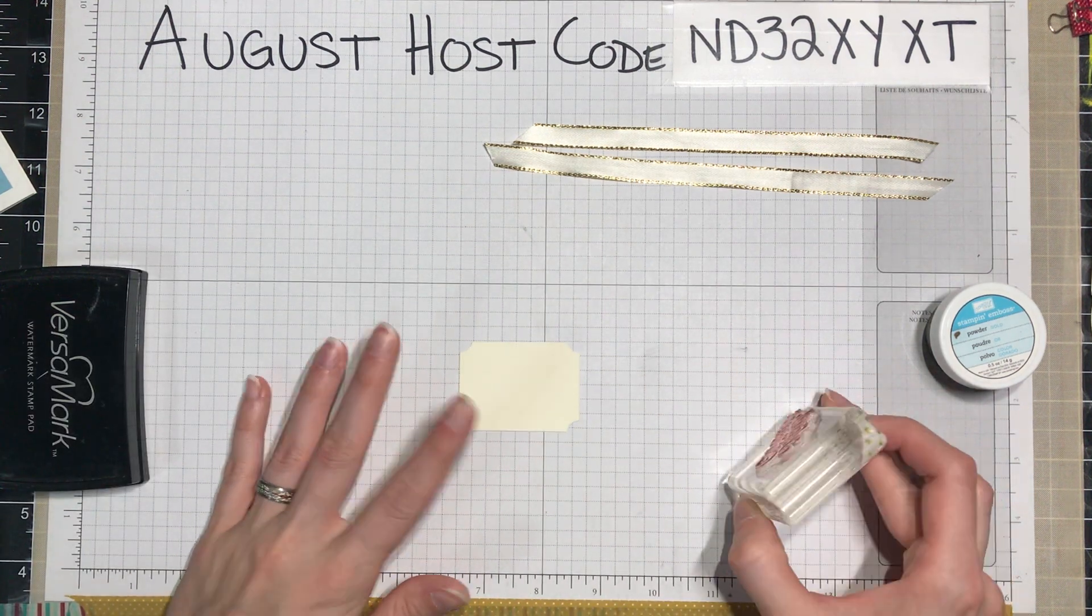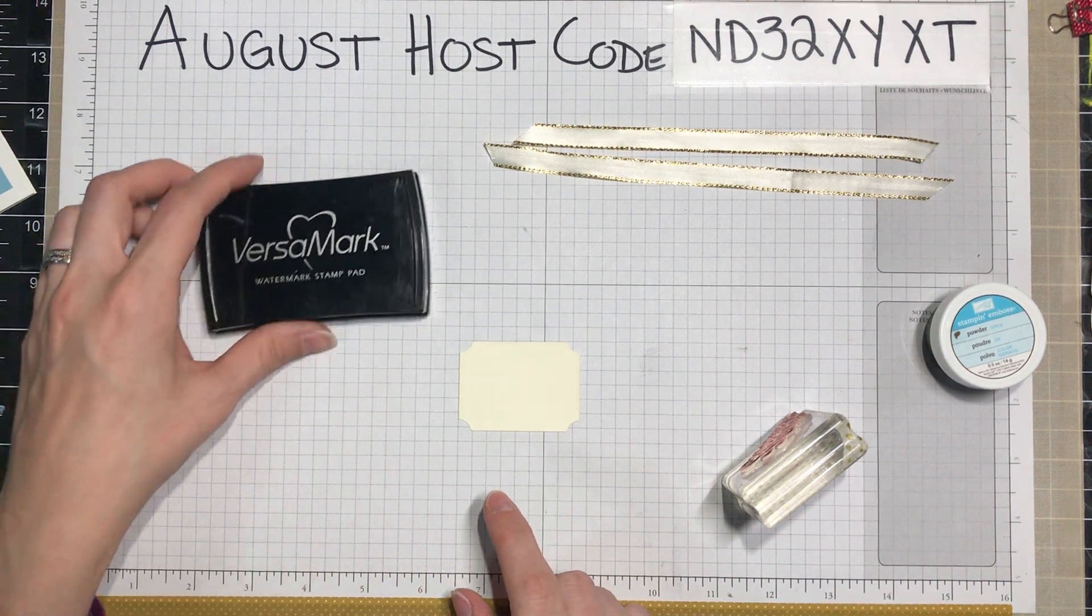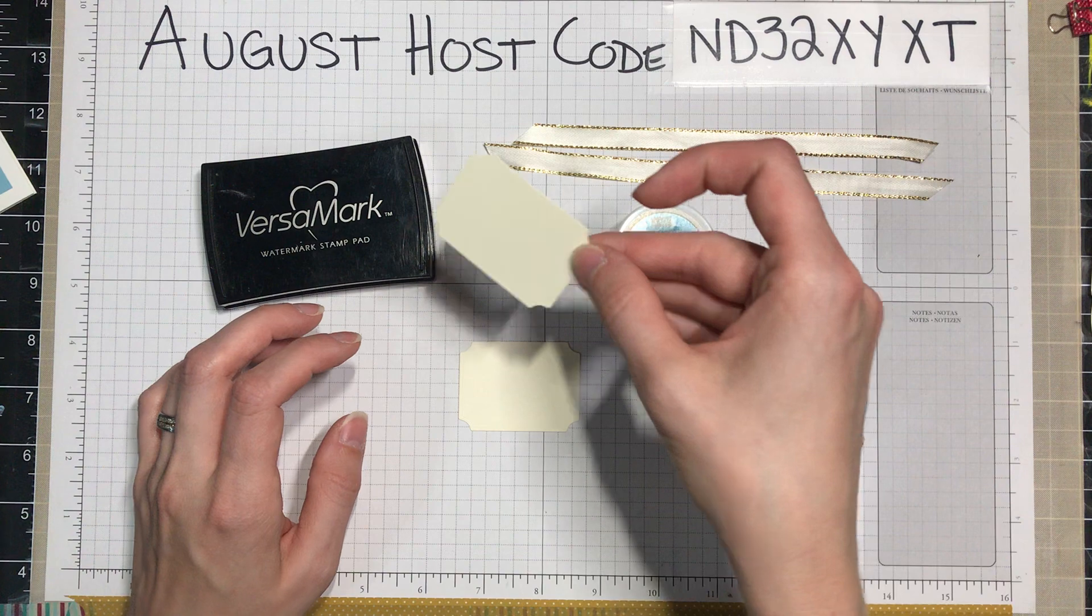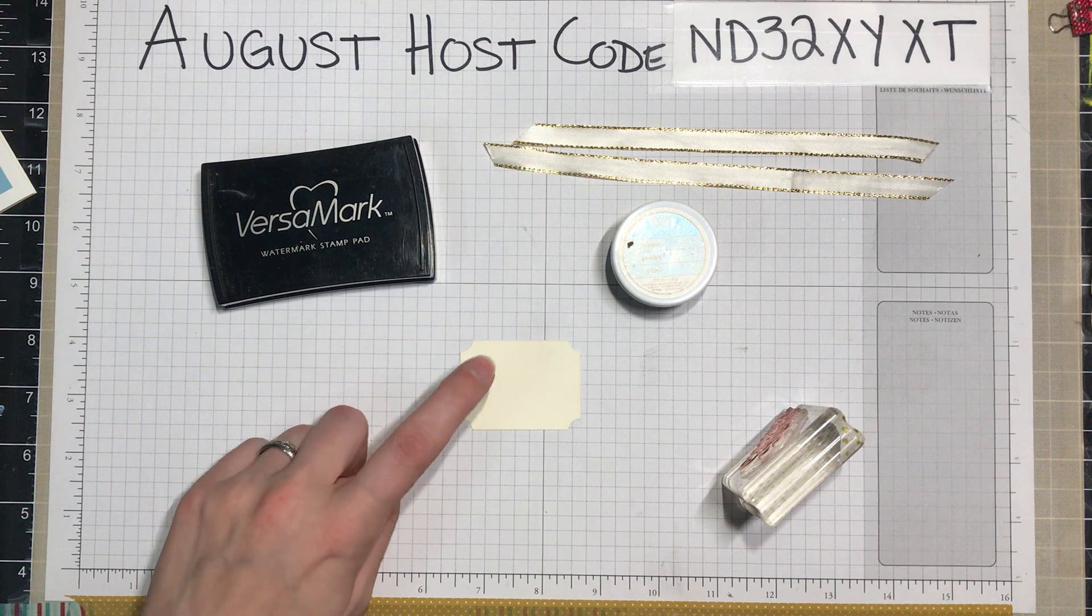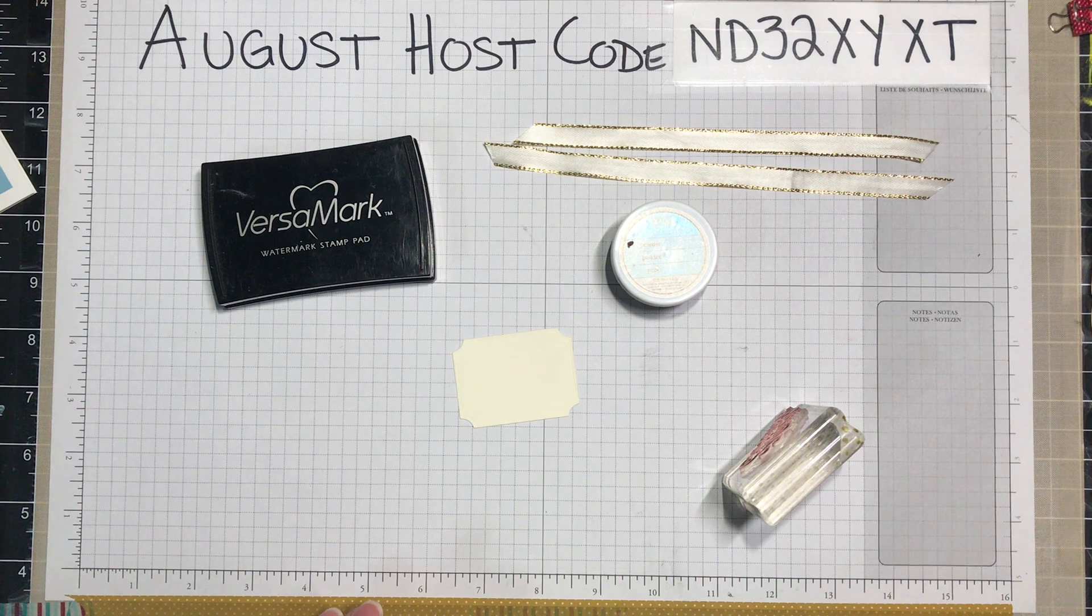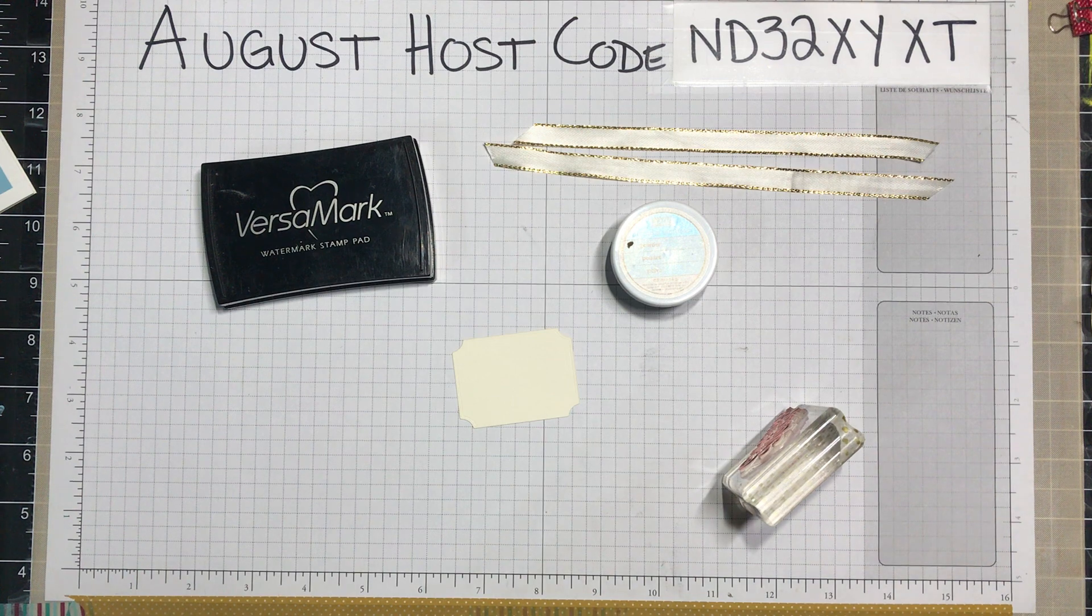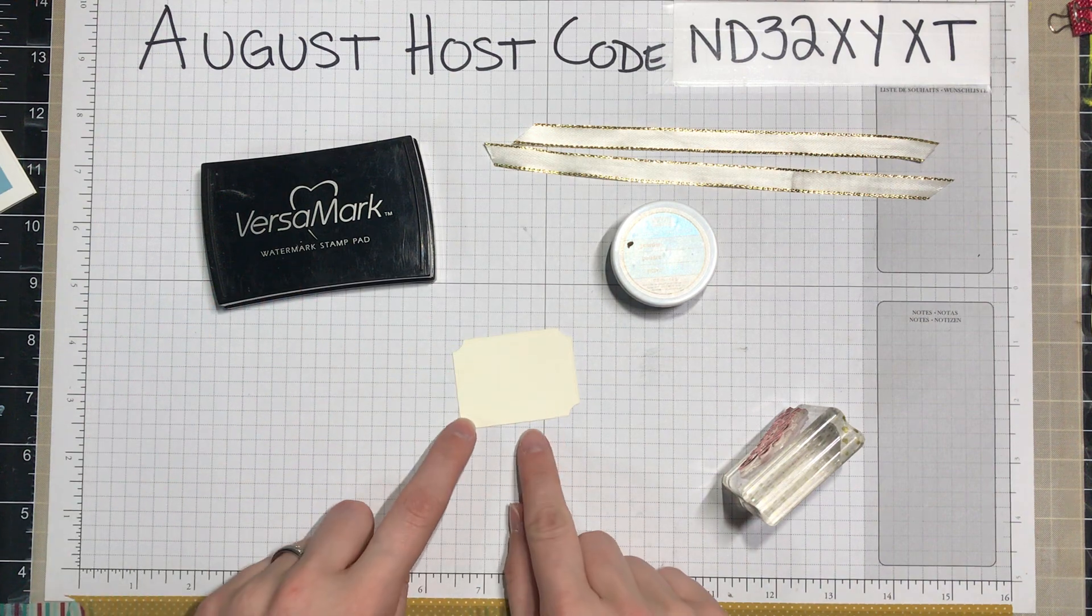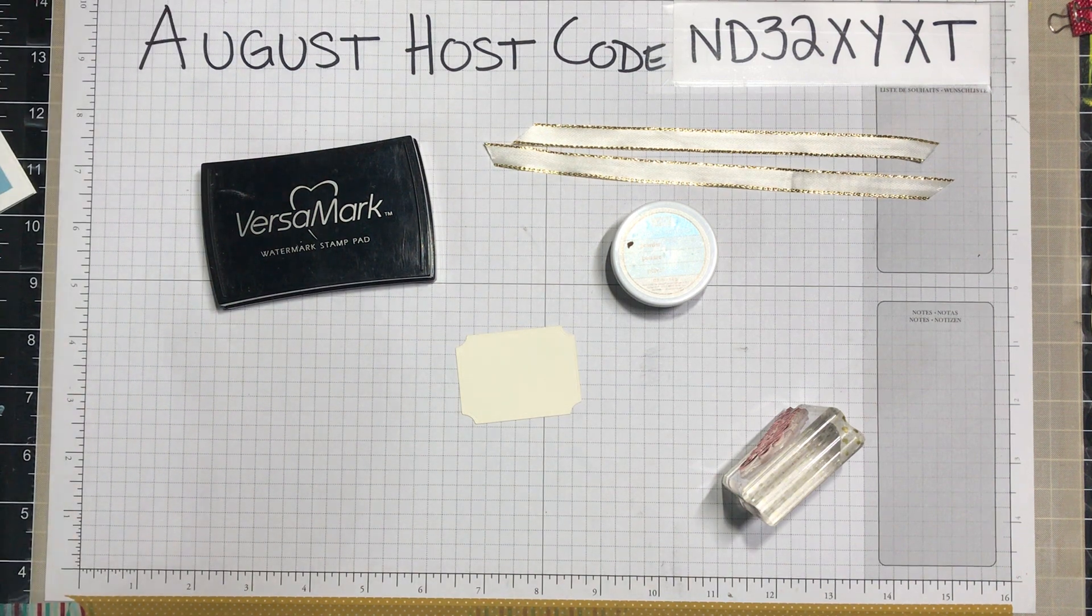So next I want to heat emboss this sentiment. I need my Versamark ink to do that. I'm going to use my gold embossing powder and I've got a backup piece just in case. I'm actually going to use my embossing buddy here. We used to carry this, we don't anymore, but you can find them in most stores. Worst case you can always use like an old sock and put some cornstarch in it. Essentially you're just removing things that could cause static and get the powder to stick to it.